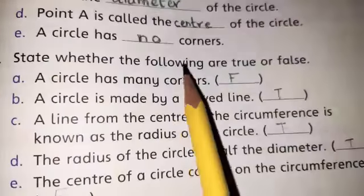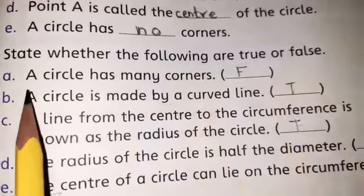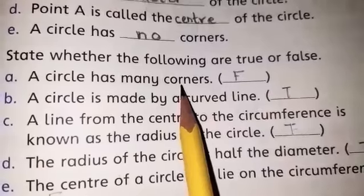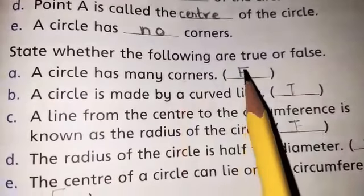Question 2: State whether the following are true or false. A circle has many corners. Is it true? Excellent, it is false.